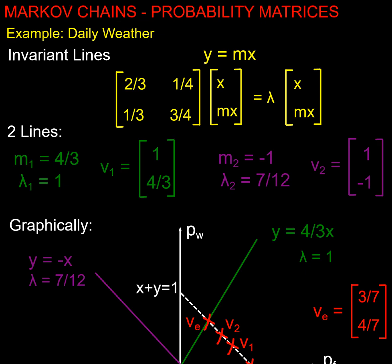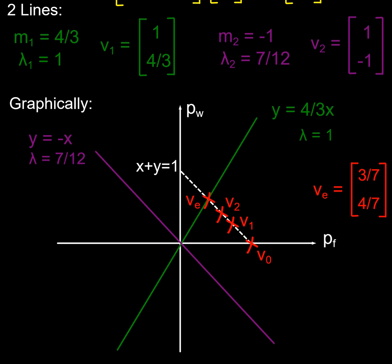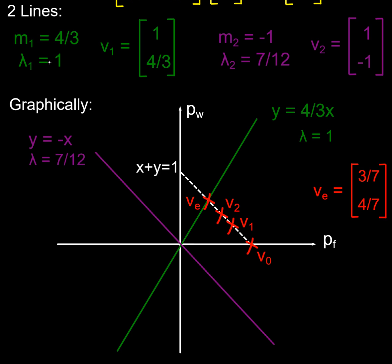So let's have a think about drawing this on a graph and what's going on. I've got my two lines that I worked out. For my m1, gradient was four thirds, my multiplier was one, so I could get a line y equals four thirds x. And I've got a multiplier of one on that one. That's my dominant invariant line. My recessive one here, m2 was negative one, so I get this line here. My multiplier is seven twelfths.